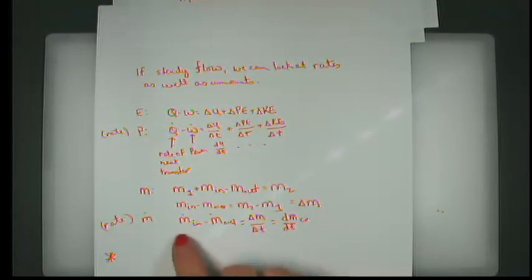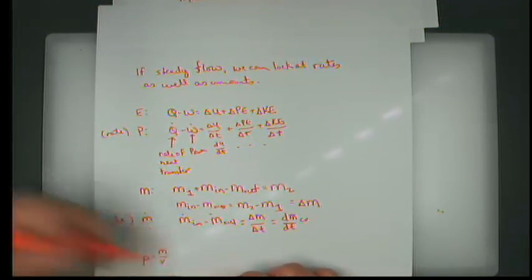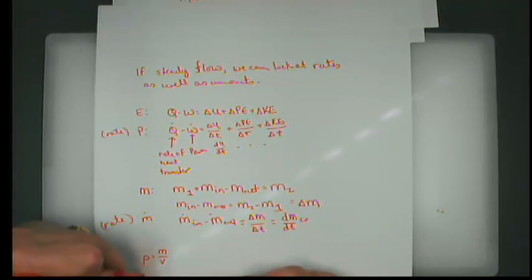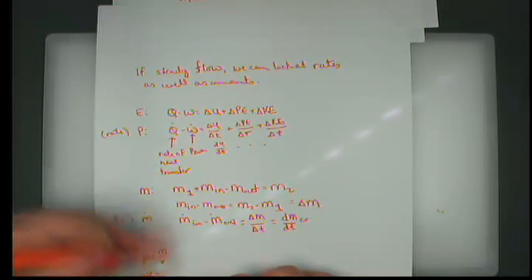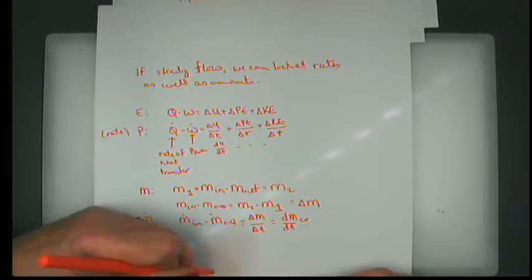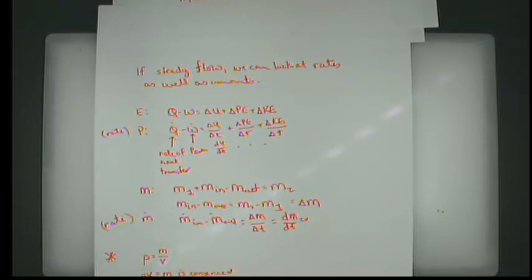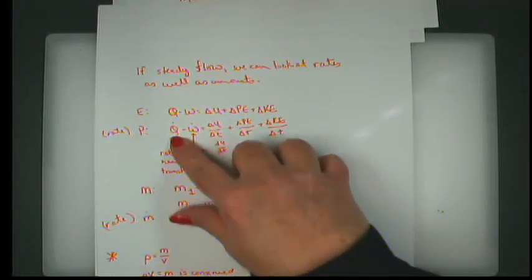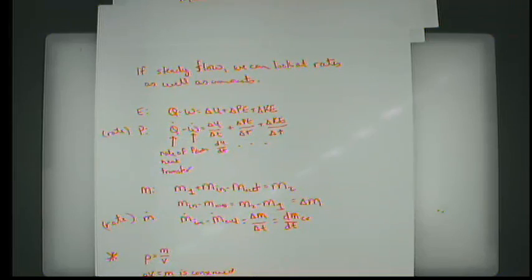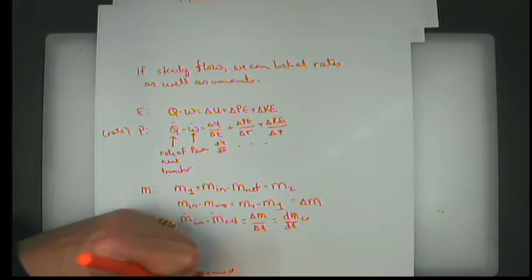Since density equals mass per volume and mass is conserved, we can say density times volume equals mass, which is conserved. Or in rate form: M-dot equals rho times V-dot, where V-dot is the volumetric flow rate (called Q in a fluids class, but we'll call it V-dot here to avoid confusion with heat transfer Q). Volume and volumetric flow rate are not conserved; the solution technique is to convert to mass flow rate.